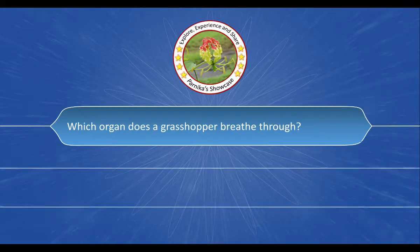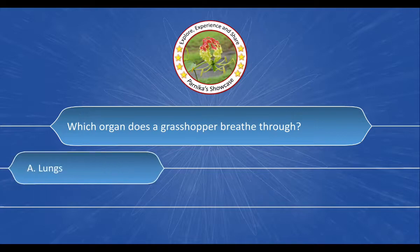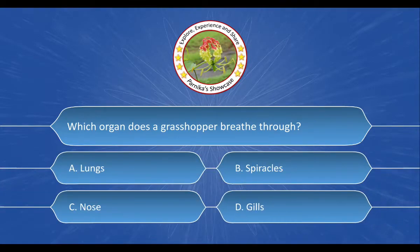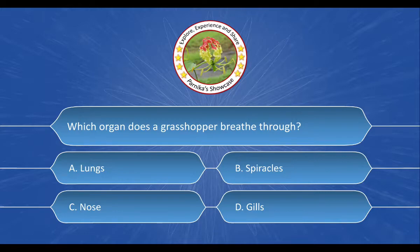Next question: which organ does the grasshopper breathe through? The options are: a) lungs, b) spiracles, c) nose, d) gills. The correct answer is option b) spiracles.